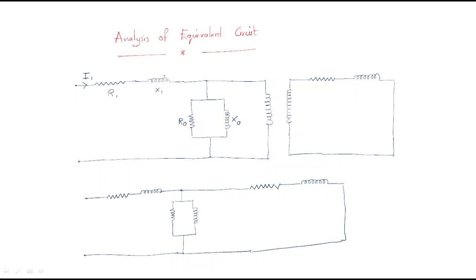The generated EMF in the primary winding is E1, and the current entering into E1 is I2-dash. The current entering into the no-load branch — before the no-load branch — the current entering into the core loss component is Ic, and the current entering into the no-load reactance is I-mu, the magnetizing current. The combination of both the core loss component Ic and the magnetizing component I-mu gives us I-naught.